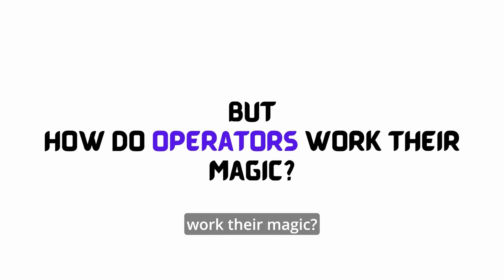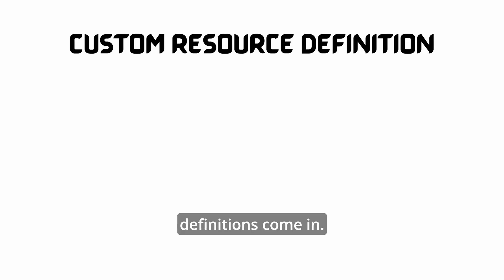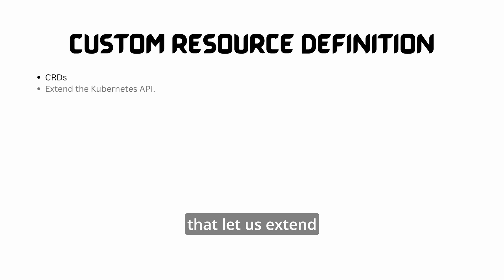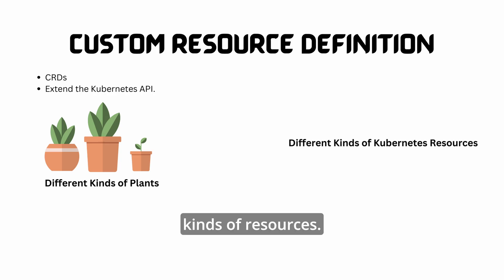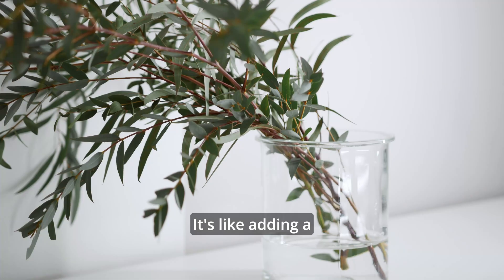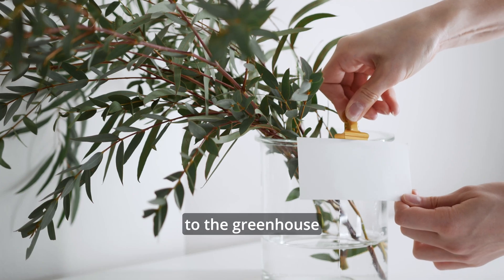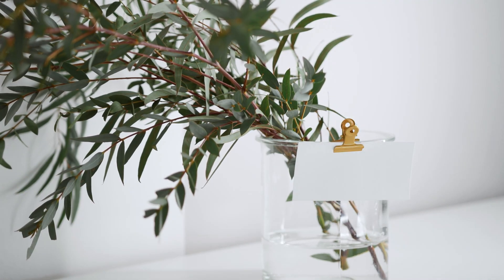But how do operators work their magic? This is where CRDs or custom resource definitions come in. Think of CRDs as the secret sauce that lets us extend the Kubernetes API. Just like the greenhouse can have various types of plants, the Kubernetes API can have different kinds of resources. With CRDs, we can create our own resources within Kubernetes — it's like adding a new type of plant to the greenhouse with specific instructions on how to take care of it.